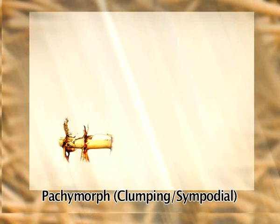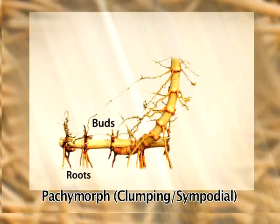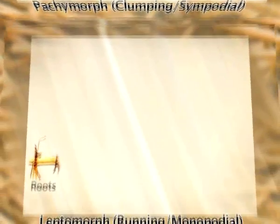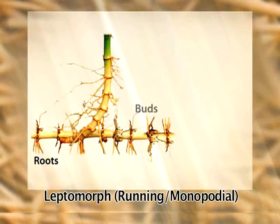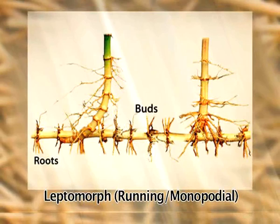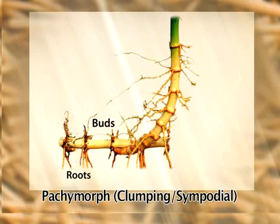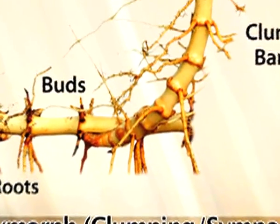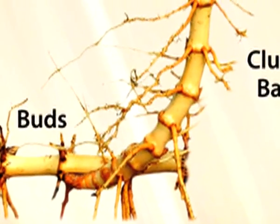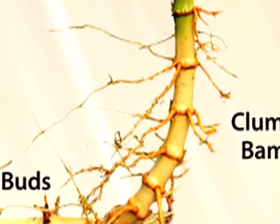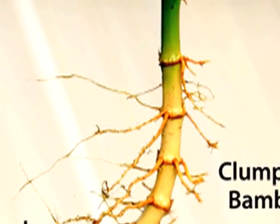The rhizome system of bamboo is generally divided into two distinct categories. The first is called the pachymorph rhizome system, also known as clumping or sympodial. It occurs in clump-forming bamboos and expands horizontally by short distances each year. The rhizomes are generally short and thick in appearance and curve upwards in close proximity to the main plant. At their nodes, new rhizomes or roots can be produced, and new columns are formed at the very tip of the rhizome, causing them to exhibit the clumping behavior.